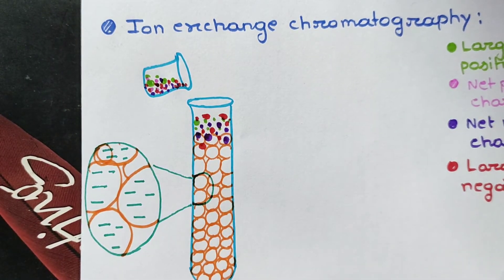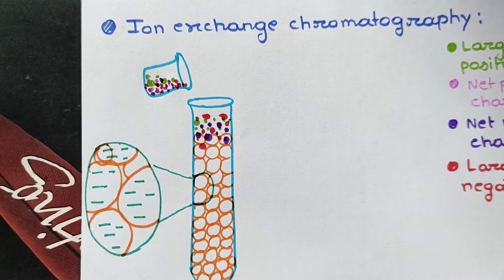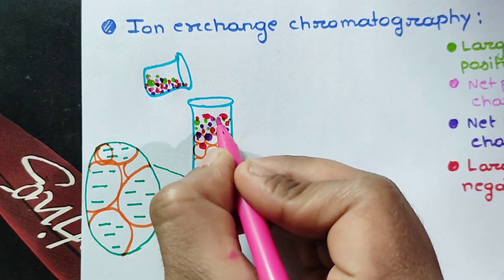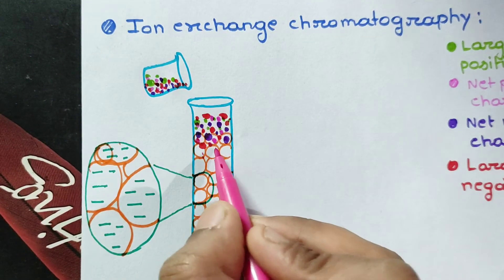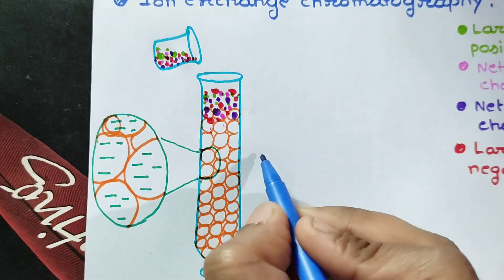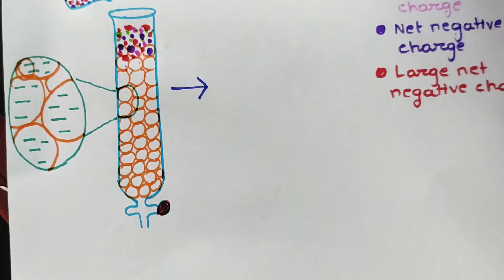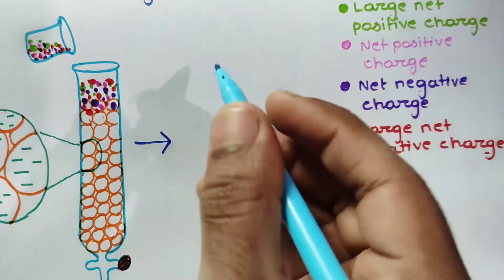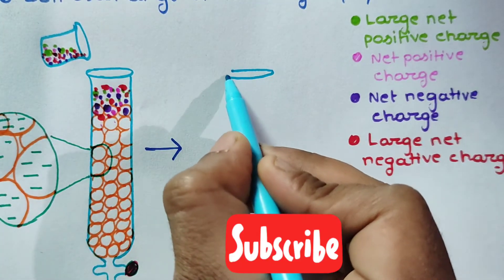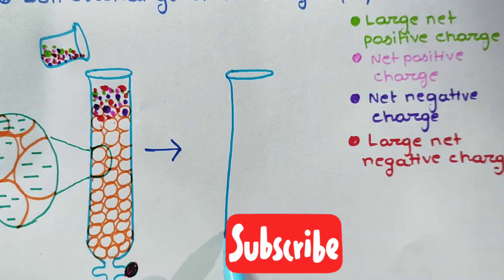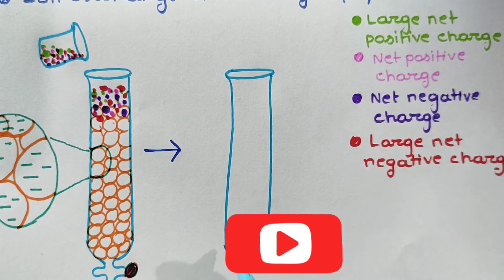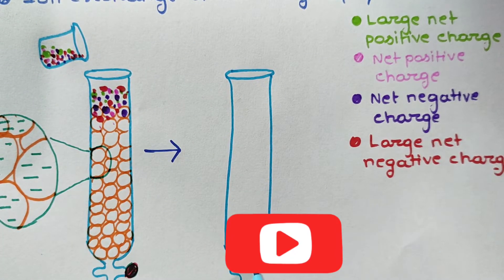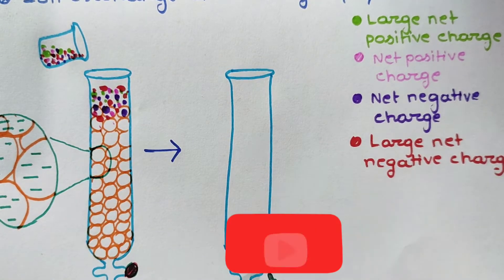The large positive charge proteins interact with the negative charge resin groups. Not only large net positive charge proteins, but also net positive charge proteins interact with the resin that has negative groups.